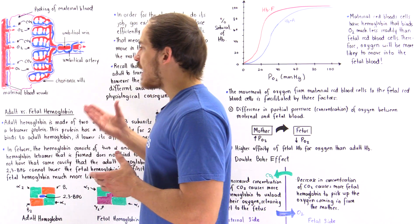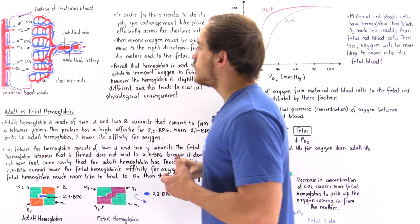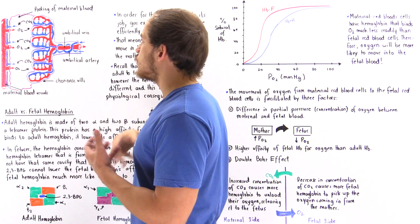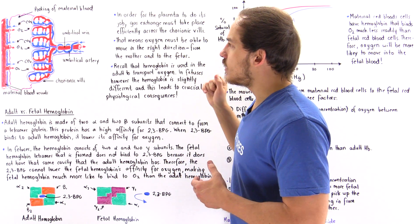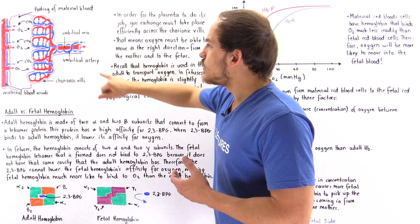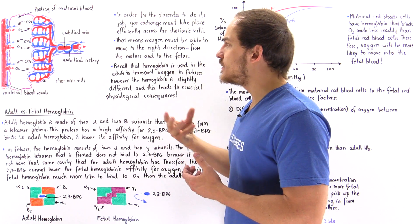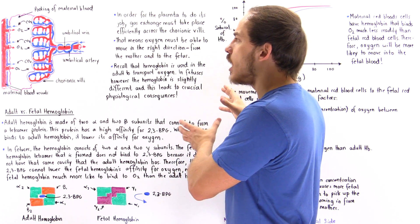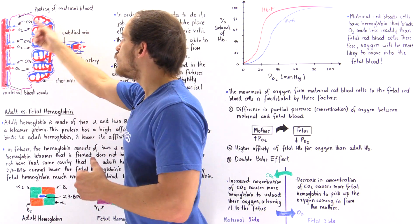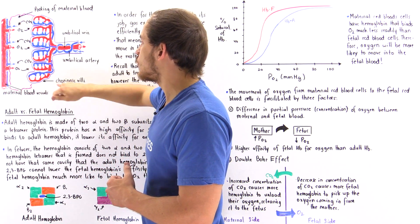Let's begin by looking at the structure of the placenta. This diagram shows the umbilical cord, which contains two types of blood vessels: the umbilical vein shown in red, and the umbilical arteries shown in blue. The umbilical arteries carry deoxygenated blood containing carbon dioxide from the organs and tissues of the fetus to the placenta, specifically to the chorionic villi — extensions of the chorion.